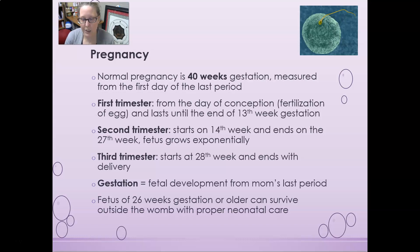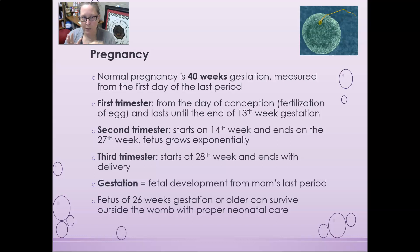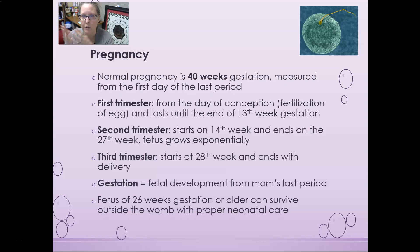Gestation is the fetal development measured from mom's last period, because that's just the easiest thing to track. Typically in a woman's cycle, the first day of the period is followed by ovulation about 14 days later, and soon after ovulation fertilization must occur for pregnancy. Fetuses of 26 weeks gestation or older can survive outside of the womb with proper neonatal care.